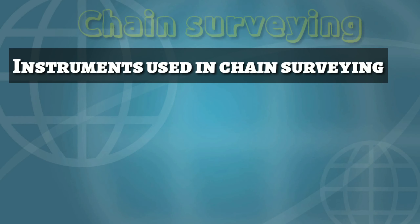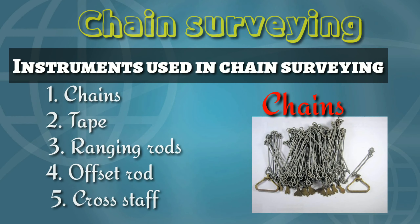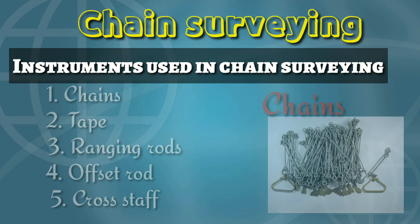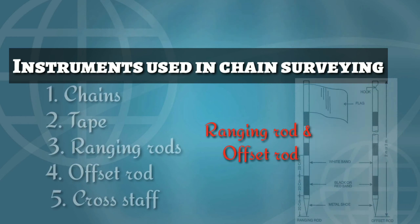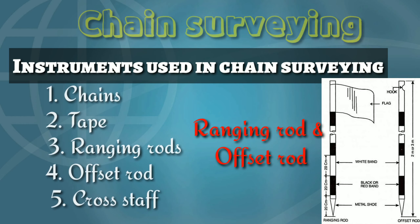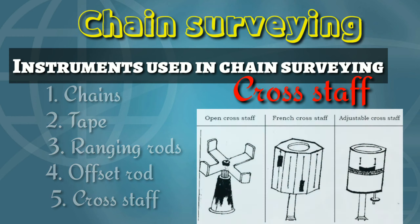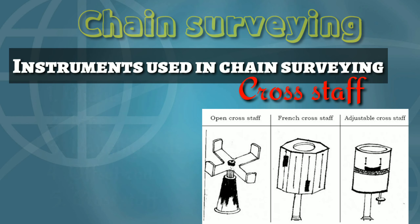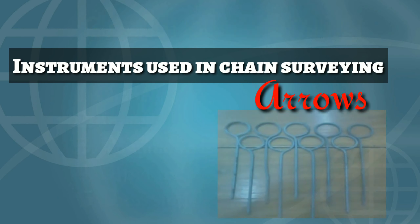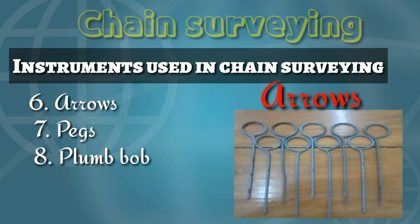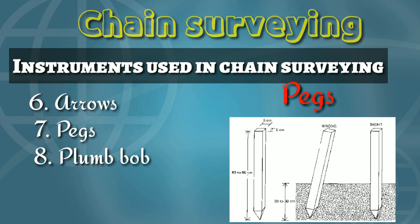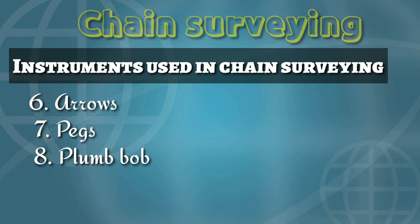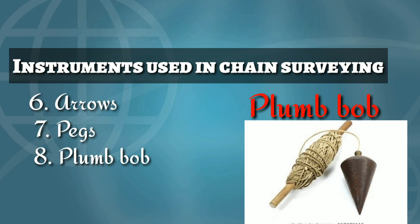The following are the instruments used in chain surveying. Basically, chains are used for measuring distance. Tapes are also used in some conditions. Ranging rods and offset rods both look similar in appearance. A cross staff is used to set perpendicular offsets. Arrows are used to mark the intermediate stations, along with wooden pegs, iron pegs, and finally a plumb bob used to level the instrument.